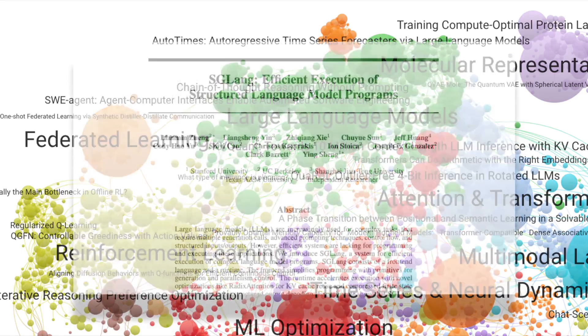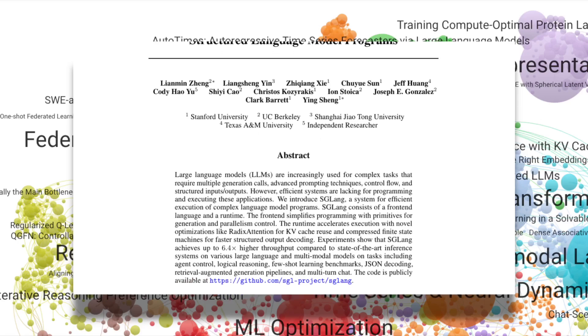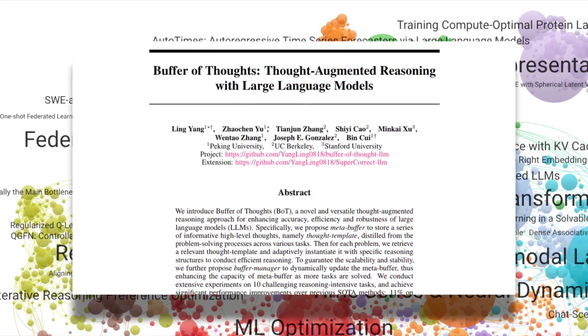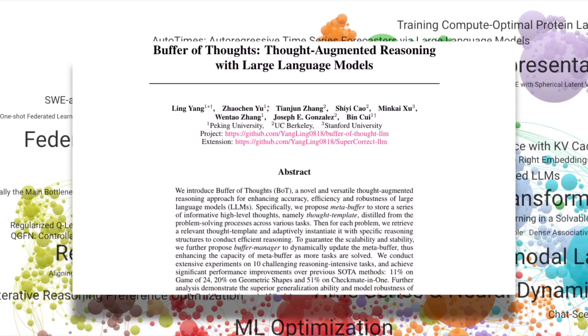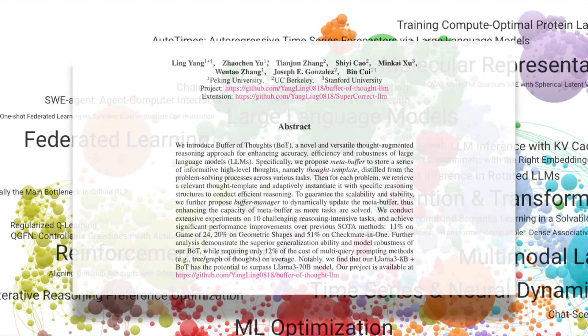Special mentions go to SGLang, a system for efficiently programming complex language model workflows, and Buffer of Thoughts, a framework for reasoning that improves accuracy, efficiency, and robustness by storing high-level thought processes.